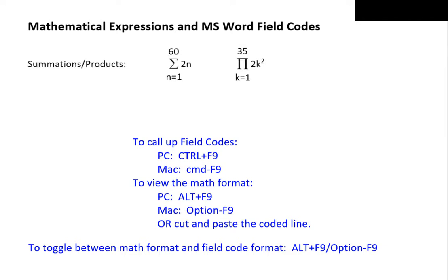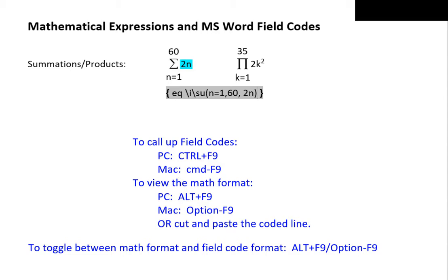We start summations and products like we do the other math field codes: the field code brackets, EQ space backslash. After the first backslash inside the field code brackets, we type I — which we think stands for integration, and we'll talk about integration in a moment. Type backslash, SU for summation, open parenthesis, the lower limit of the summation, comma, then the upper limit, comma. A space after the comma to provide a gap between the sigma notation and the summand, then the summand. Don't forget the closing parenthesis. Cut and paste, and we have our summation.